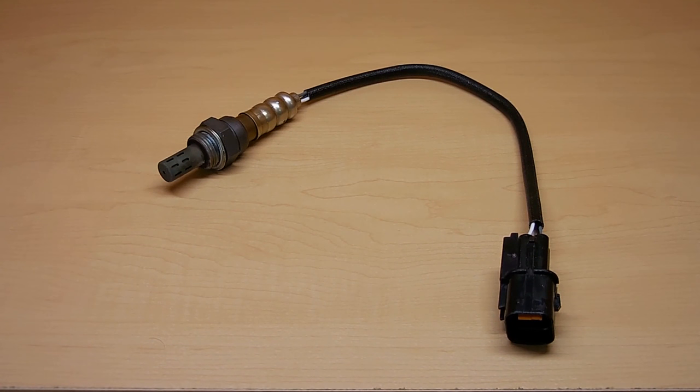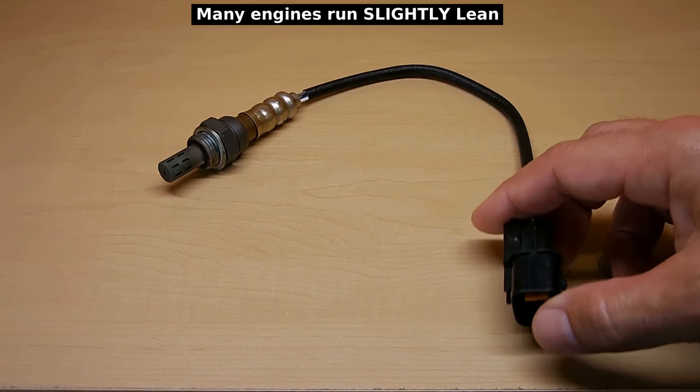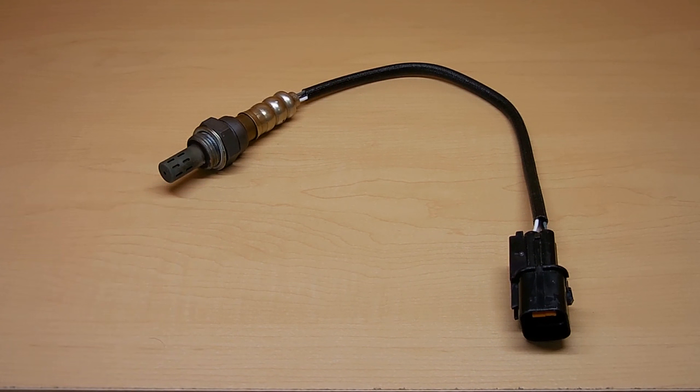Many people that get trouble codes when using an OBD scanner that show oxygen sensor problems, such as heater circuit problems, slow sensors, or too lean or too rich codes, usually go out and buy a new expensive oxygen sensor when it's usually not the problem.